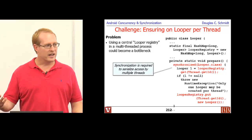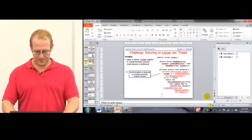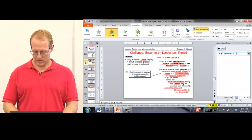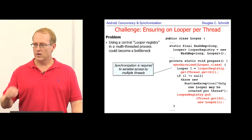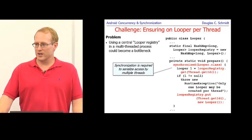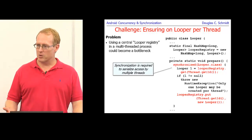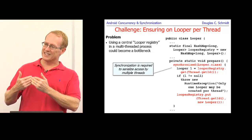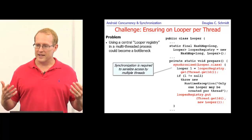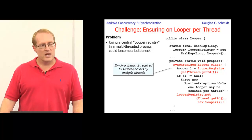If we get back something non-null from the get operation, someone's already registered a looper, which is a no-no. We throw a runtime exception and bail out saying only one looper can be configured per thread. But if we don't find a pre-registered looper, we make a new looper, stick it into the registry under the thread ID, and release the lock. That said, one question is: as the looper processes messages, is it doing work on itself or on another thread that passed the message?